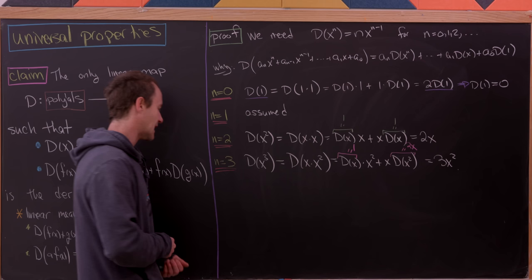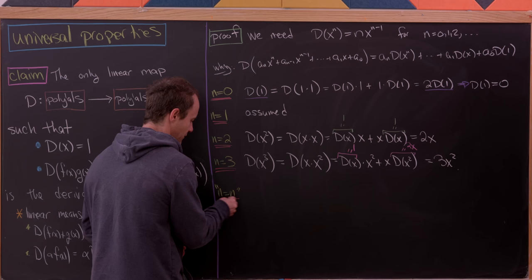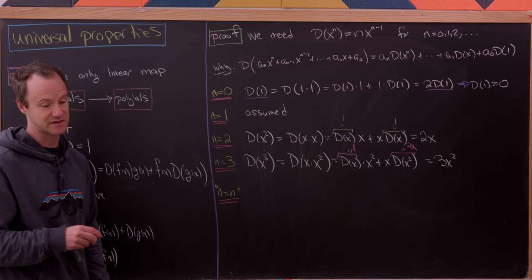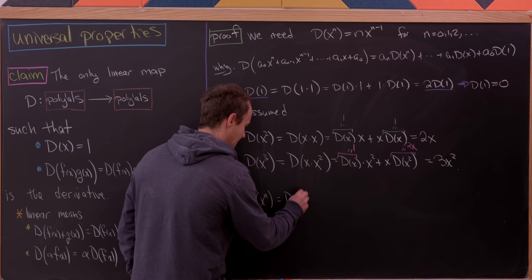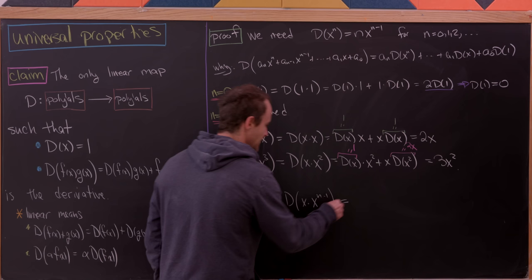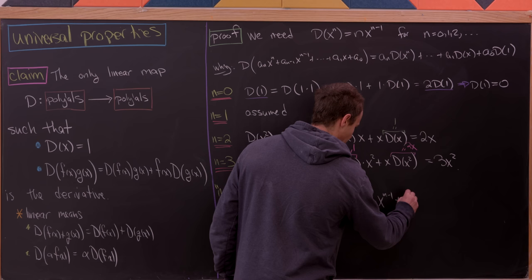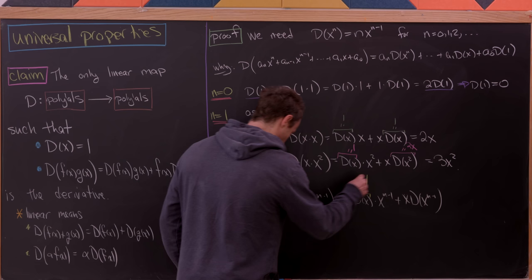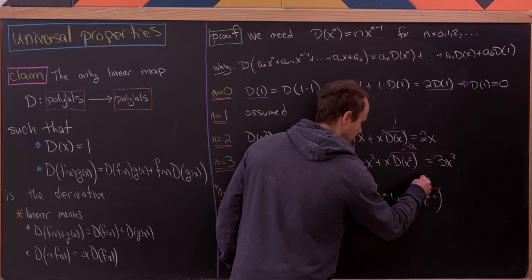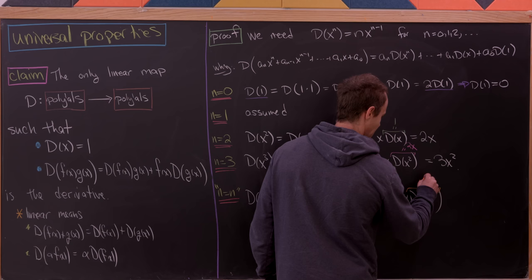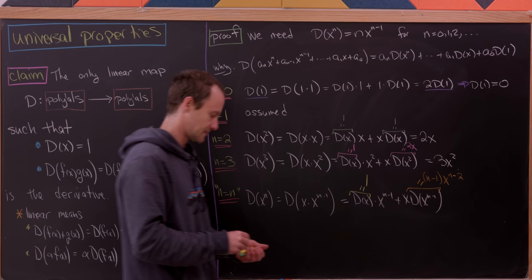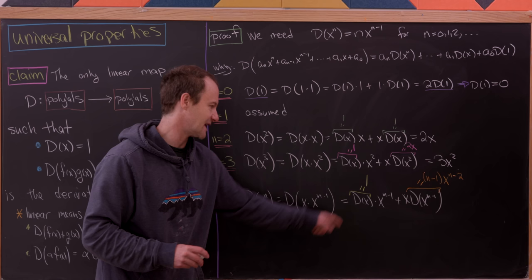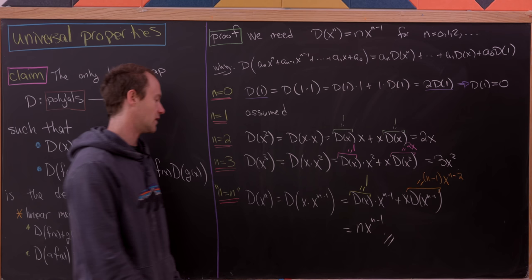Now the general inductive case: assume the power rule holds up to n − 1. Then d(xⁿ) = d(x·xⁿ⁻¹). Applying the Leibniz rule: d(x)·xⁿ⁻¹ + x·d(xⁿ⁻¹). By assumption d(x) = 1, and by the induction hypothesis d(xⁿ⁻¹) = (n−1)xⁿ⁻². So we get xⁿ⁻¹ + x·(n−1)xⁿ⁻² = xⁿ⁻¹ + (n−1)xⁿ⁻¹ = n·xⁿ⁻¹. This finishes the proof.